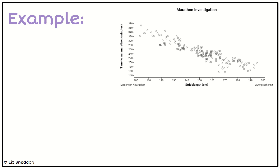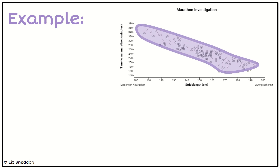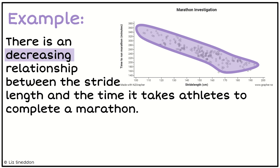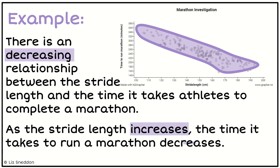Let's have a look at this one. This is looking at the stride length of people that run marathons and the time it takes them to run marathons. Step one: draw a blob around the data. This is a decreasing relationship between stride length and the time it takes athletes to complete a marathon — I've always got that sentence in context with both variables in it. To justify it, we always talk about as the explanatory variable increases, so I'm going to say as my stride length increases, the time it takes to run the marathon decreases, because the relationship is a decreasing one.